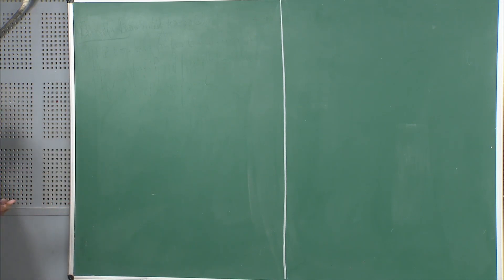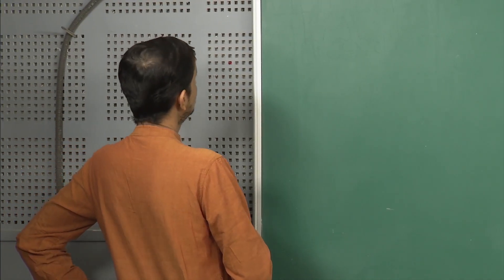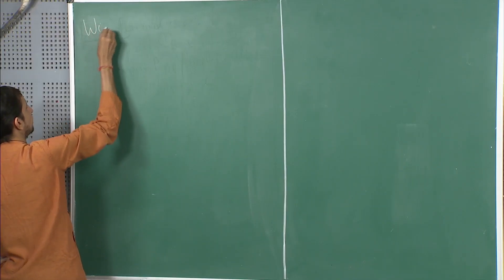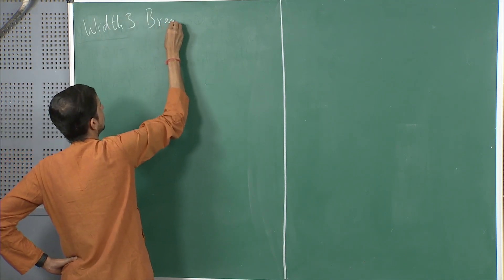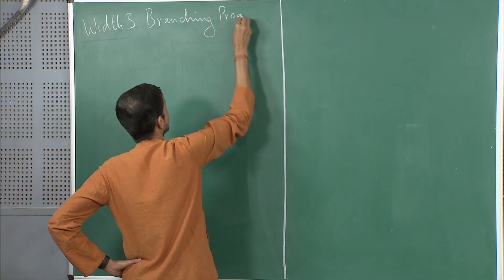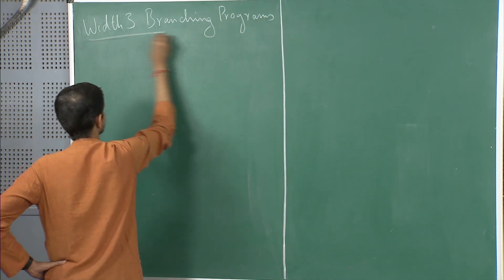This result was also due to Barrington. After his result showing width-5 branching programs are equivalent to NC1, he came up with this second result. We are going to focus on width-3 branching programs.